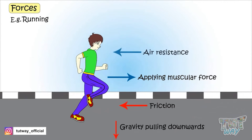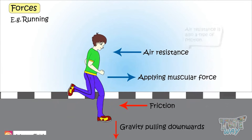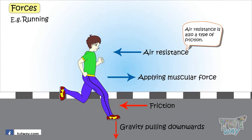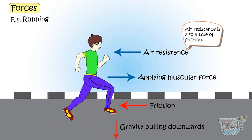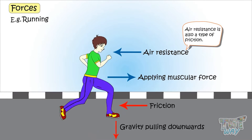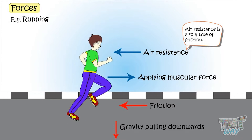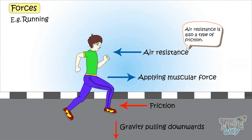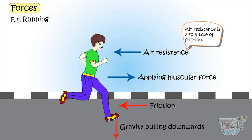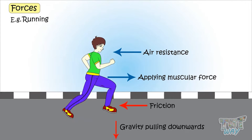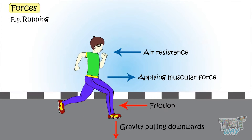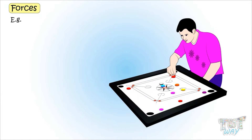Air resistance is also a type of friction that is posed by the air and prevents anything from moving, decreasing the speed of the moving object. Now let's see forces acting while we are playing a striker game.